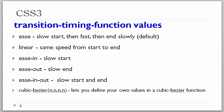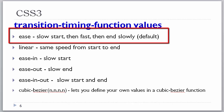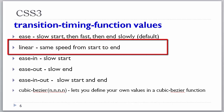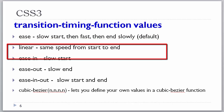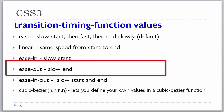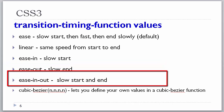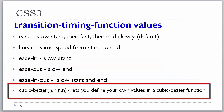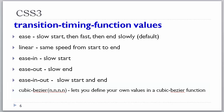These are the various transition timing functions. Ease, which is the default, is a slow start, then fast, then a slow end. Linear is the exact same speed from start to end. Ease-in is a slow start. Ease-out is a slow end. Ease-in-out is slow at both start and end. You can also make your own cubic Bezier curve to define custom values. The best way to see these functions is to use them at an exaggerated time, such as 5 seconds or more, so you can actually see it happening.